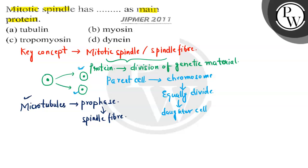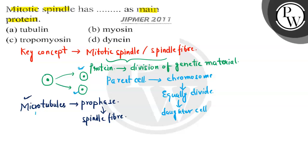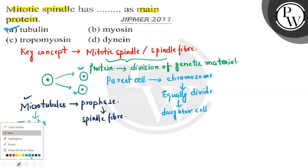When we talk about microtubules, they are made up of a protein known as tubulin. So the main protein component of microtubules is tubulin. Therefore, the spindle fiber or mitotic spindle has tubulin as its main protein content, and option A is the correct answer.